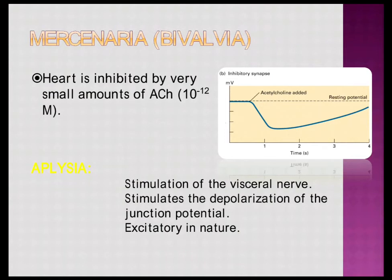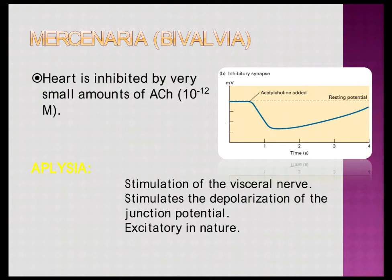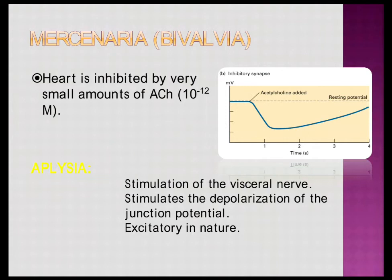In Mercenaria we have inhibition, while in Aplysia stimulation of the visceral nerve is excitatory. Looking at the graph for Mercenaria: this is the resting potential of the nerves — the main motor forces behind heart contraction. Even a small amount of ACh is inhibiting the heart by making the nerve even more hyperpolarized, pushing it below the resting potential.